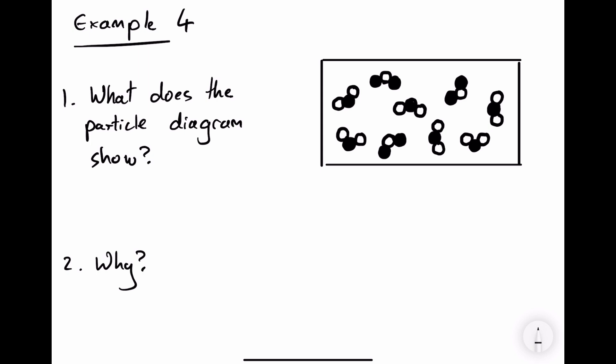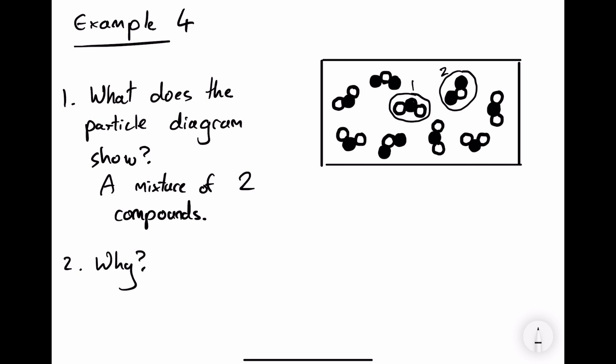Here's our final example. What does the particle diagram show? At first you might think it's a compound, but actually these two particles are made up of a different ratio of atoms. In the first one, there are two white particles and one black particle chemically joined together, whereas in the second one there are two black particles and one white particle chemically joined together. So we have two different compounds, which means the particle diagram shows a mixture of two compounds, because each compound is made of two different types of atoms chemically joined together, and the two different compounds are not chemically joined together.